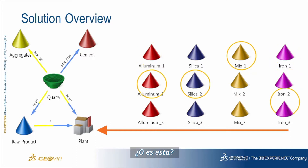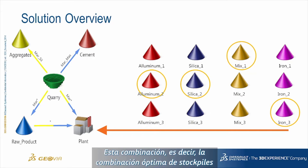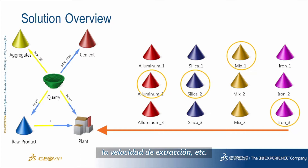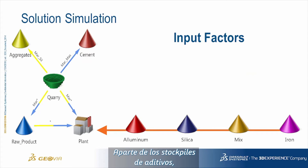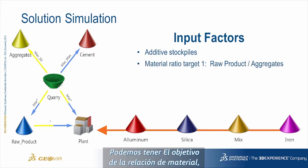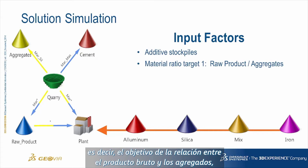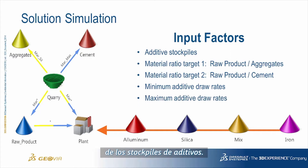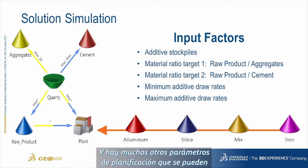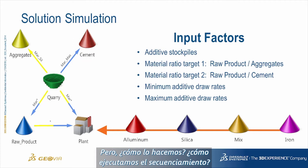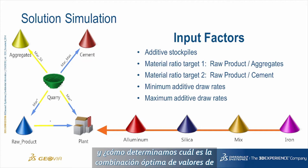Not only do we need the optimum combination of additive stockpiles, but also the optimum combination of scheduling parameters such as mining direction, block size, mining rate, and others. Over and above the additive stockpiles, we have other scheduling parameters we can adjust: material ratio targets — the ratio of raw product to aggregates as well as raw product to cement — and minimum and maximum additive draw rates from the additive stockpiles. There are many other scheduling parameters that can be introduced as input factors for this solution.